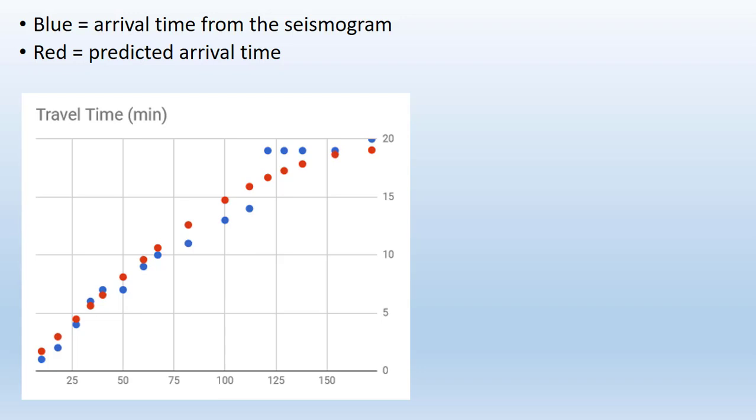The blue dots represent the actual arrival times of the seismic waves of the 2010 Haiti earthquake. At first, the waves arrive at the station at pretty much the same time that we would predict. So for small geocentric angles, the arrival time of a seismic wave to a station is just what we would predict if the Earth were made up of solid rock.